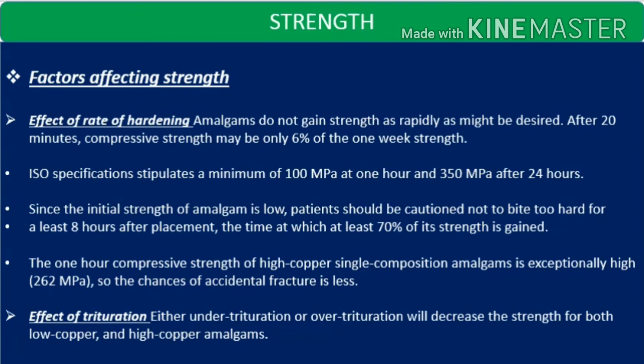Factors affecting strength: effect of rate of hardening. Amalgams do not gain strength as rapidly as might be desired. After 20 minutes, compressive strength may be only 6% compared to the one-week strength. ISO specification stipulates a minimum of 100 megapascal at 1 hour and 350 megapascal after 24 hours. Since the initial strength of amalgam is low, patients should be cautioned not to bite too hard for at least 8 hours after placement, which is when at least 70% of strength is gained.